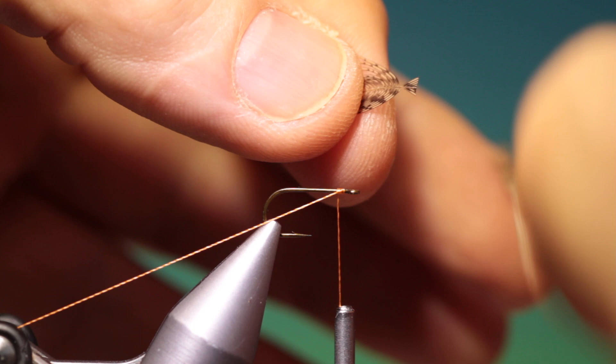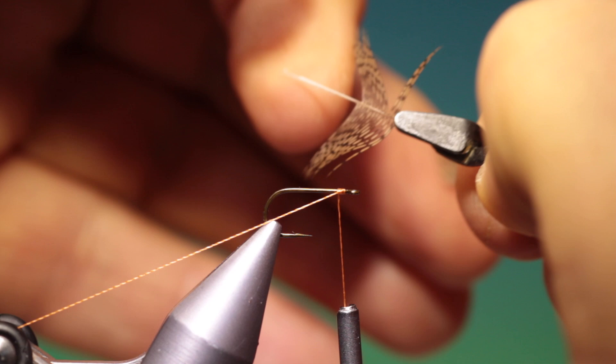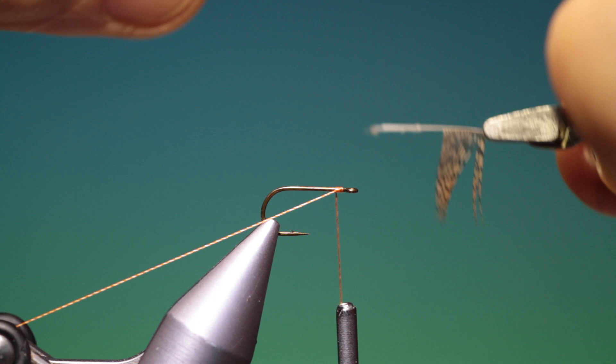Put my hackle plier back on there. And what I want to do is strip off these on top. So we have this part of the hackle pointing towards us.